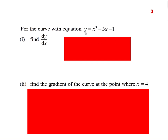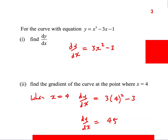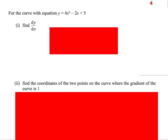Next question — we've got a function as y rather than A this time. Differentiate it the same way: bring the power down, reduce by 1, giving 3x². Then -3x differentiates to -3. A constant just disappears. Find the gradient of the curve when x = 4. This is the gradient function — it tells me the gradient at any point — so when x = 4, dy/dx = 3(4²) - 3 = 45.